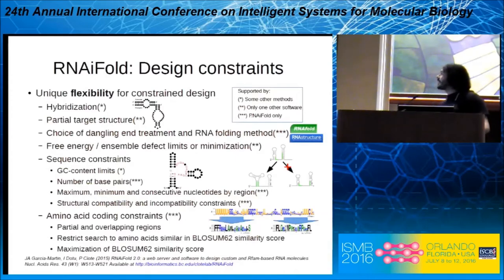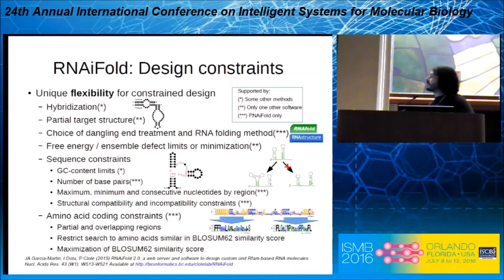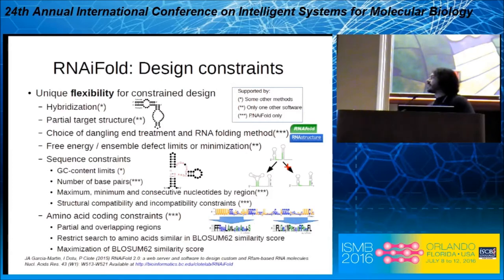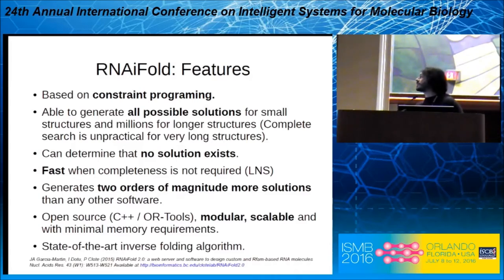Among the synthetic design constraints we can specify using RNAfold, most are supported only by RNAfold. These include using a partial target structure, relaxing the target structure, choosing different RNA folding methods with different energy parameters, minimizing free energy, specifying GC content, number of base pairs per side, avoiding long stretches of consecutive nucleotides, and even including codon coding constraints to design sequences that overlap with specific coding regions. RNAfold is based on constraint programming, different from local search algorithms, so it can generate all possible solutions for small structures and millions for longer structures.